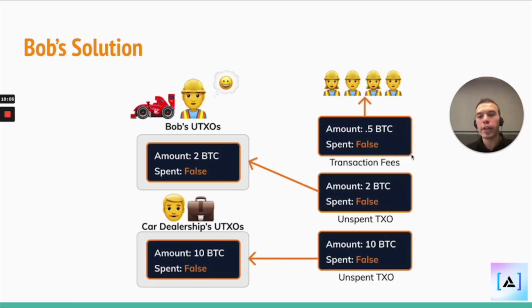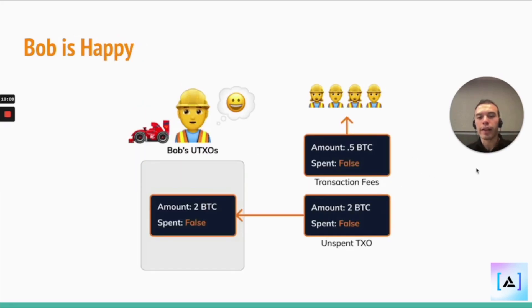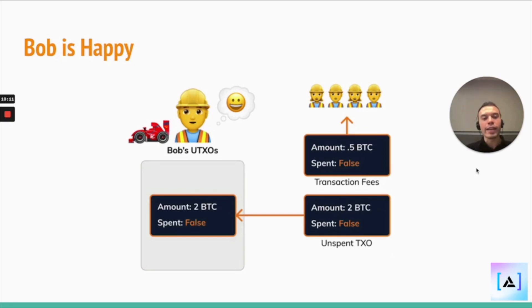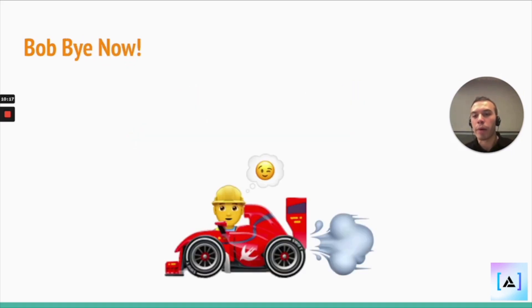So that's pretty nice transaction fees for the miners in this interaction. Bob now has his car and he has a fresh UTXO worth 2 Bitcoin. That's how it works in the UTXO system — it's very much like cash.